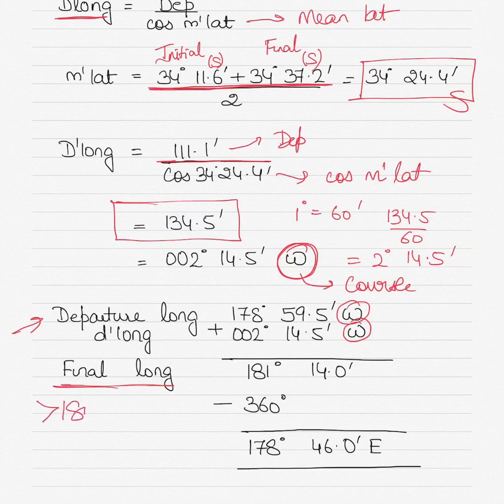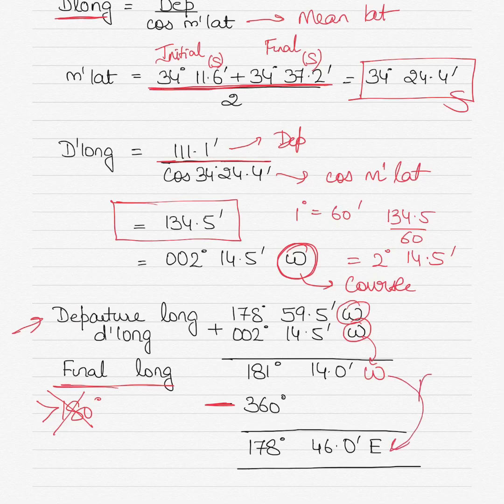But longitude cannot be greater than 180 degrees. Whenever the final longitude exceeds 180 degrees, subtract it from 360 degrees and reverse the sign — so West becomes East.